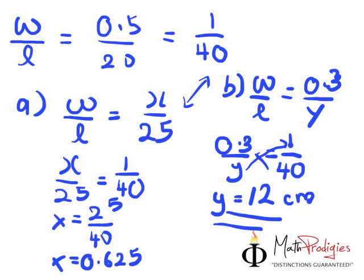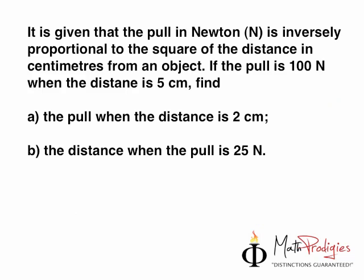The question is pretty simple. It is given that the pull in Newton, this is, by the way, science, physics, is inversely proportional to the square of the distance in centimeters from an object. If the pull is 100 newton when the distance is 5 cm, find A, the pull when the distance is 2 cm, and find B, the distance when the pull is 25 newtons.